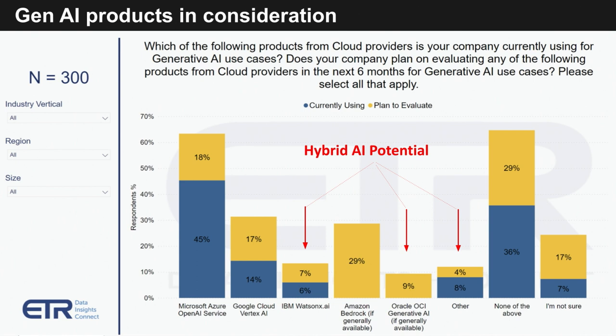We're not specifically showing it here, but you can see it's got some potential. The new call out of this data is the impact of hybrid AI — that notion of bringing AI to the data — which we think occurs in the cloud, on-prem, and at the edge, because that's where data lives. Oracle is the other call out on this chart, as are many other players, as we showed in the power law graphic.